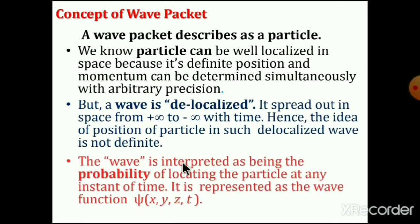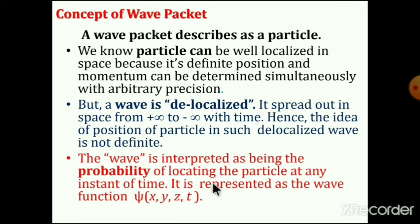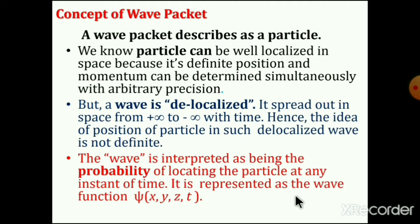In quantum mechanics, the wave is interpreted as being related to probability. The probability of locating the particle at any instant of time is represented by the wave function, which is a function of x, y, z, t.